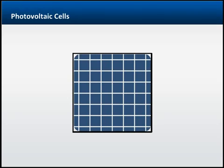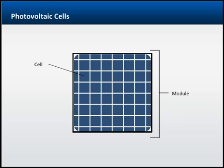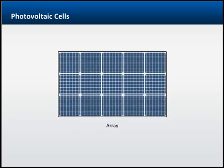Photovoltaic, or PV, cells directly convert sunlight to electricity. Multiple cells are grouped within a structural frame to create a module. When more power is needed than a single module can provide, the modules are combined into groups called arrays.